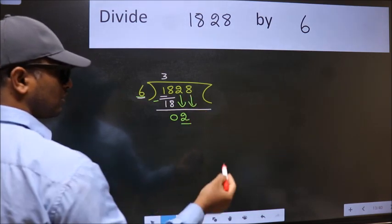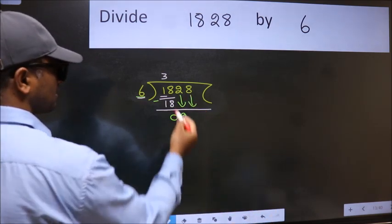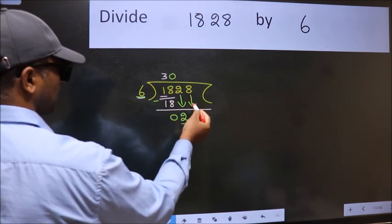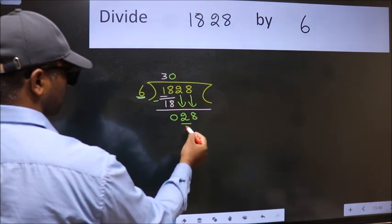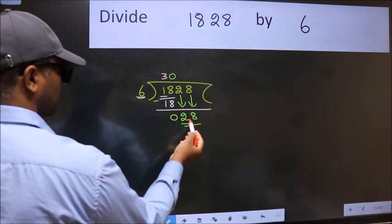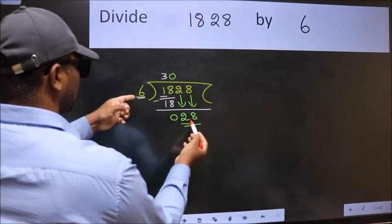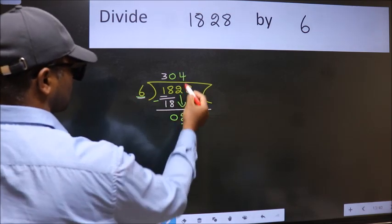And the rule to bring down second number is put 0 here. Then only we can bring this number down. So, 28. A number close to 28 in 6 table is 6 fours 24.